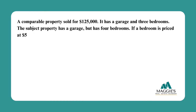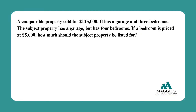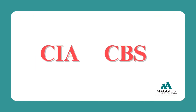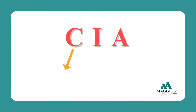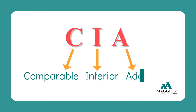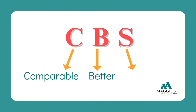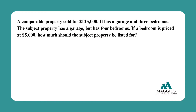A comparable property sold for $125,000. It has a garage and three bedrooms. The subject property has a garage but has four bedrooms. If a bedroom is priced at $5,000, how much should the subject property be listed for? For these adjustment questions we use the CIA and CBS acronyms. CIA means if the comparable is inferior, then you add. CBS means if the comparable is better, then you subtract.